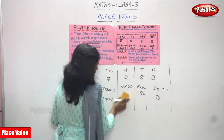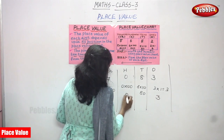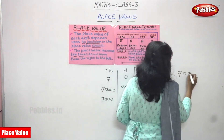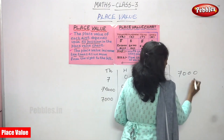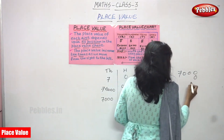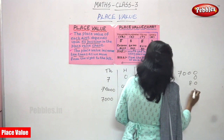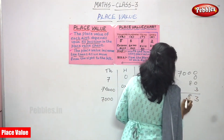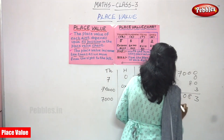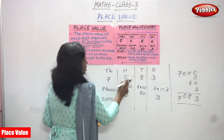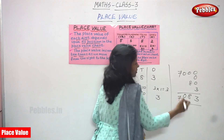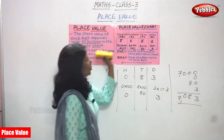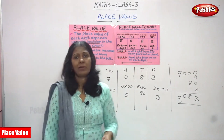So the number is 7083 — seven thousand eighty-three. Thousands place: 7000, hundreds place: 0, tens place: 80, ones place: 3. The right answer is 7083, that is seven thousand eighty-three. I think you understand the place value chart very well.